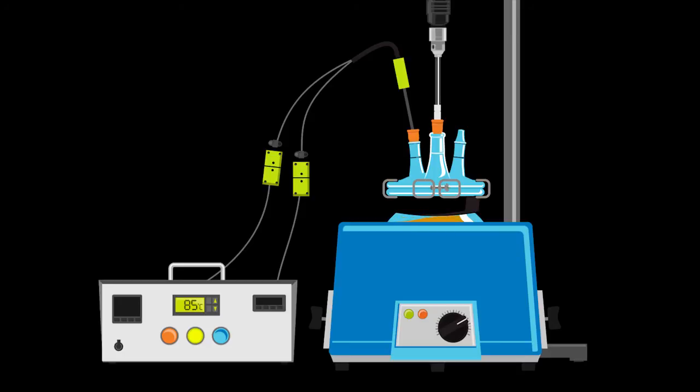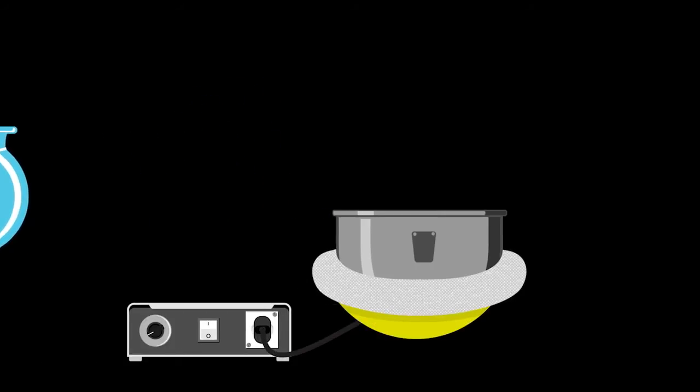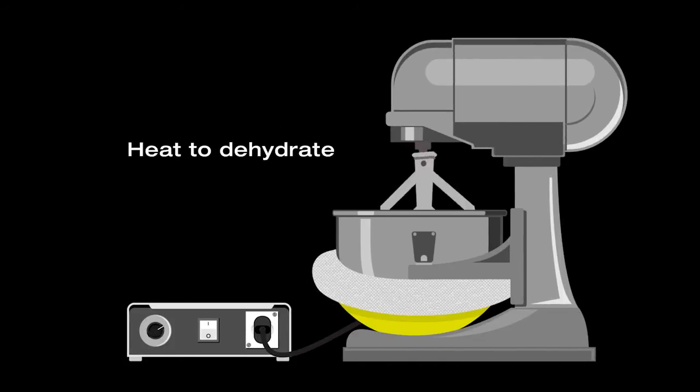Once the grease is fully converted, transfer it to an open mixing vessel to begin the final stage. Heat and mix to dehydrate the grease.